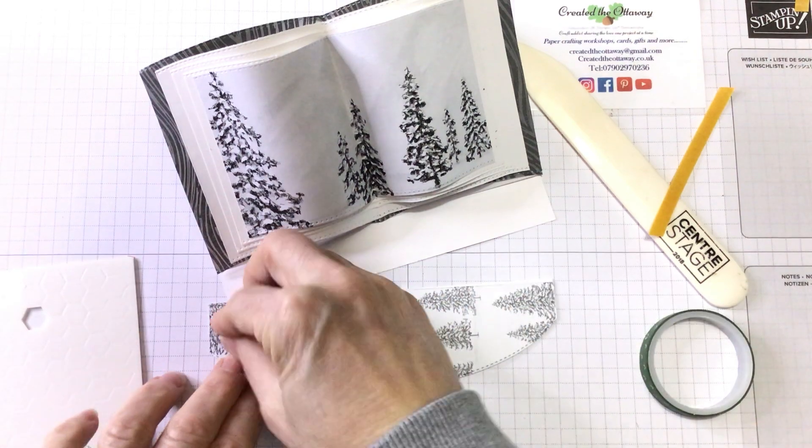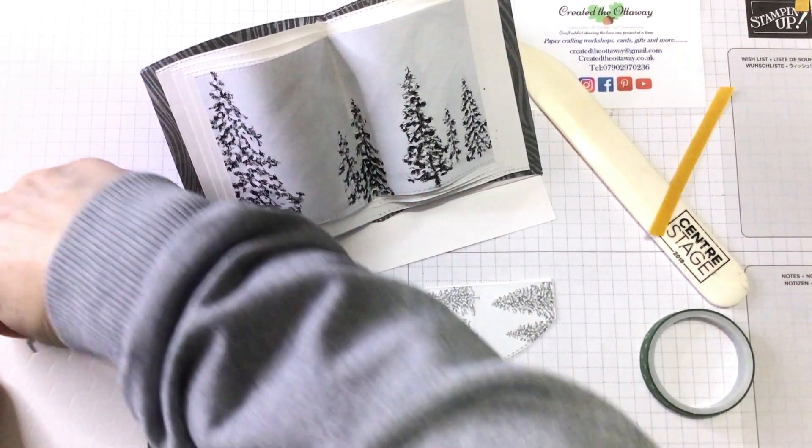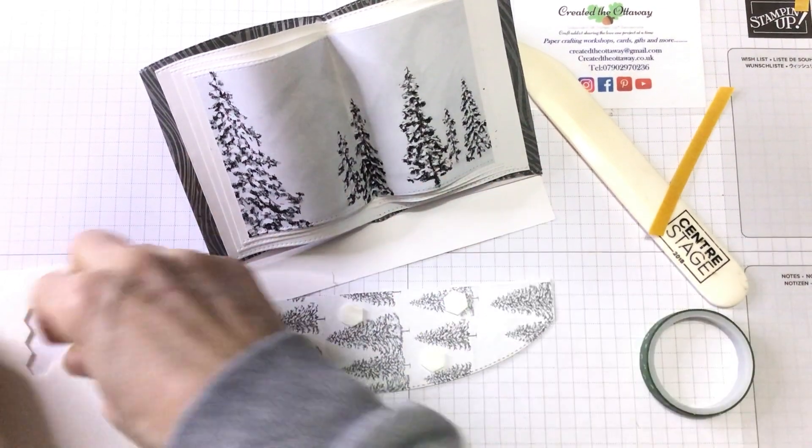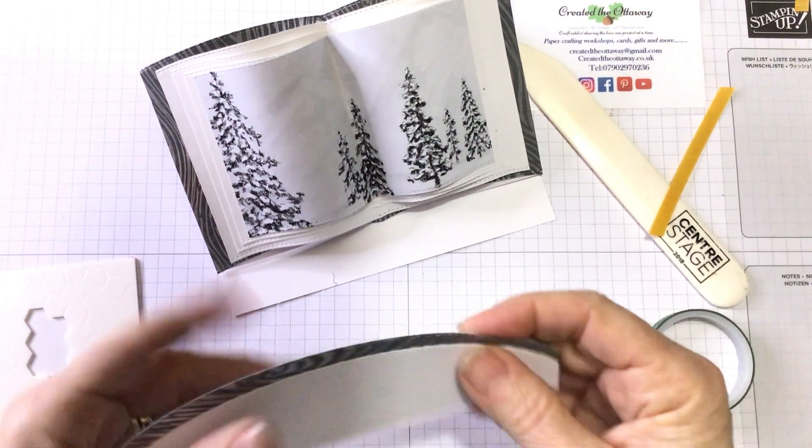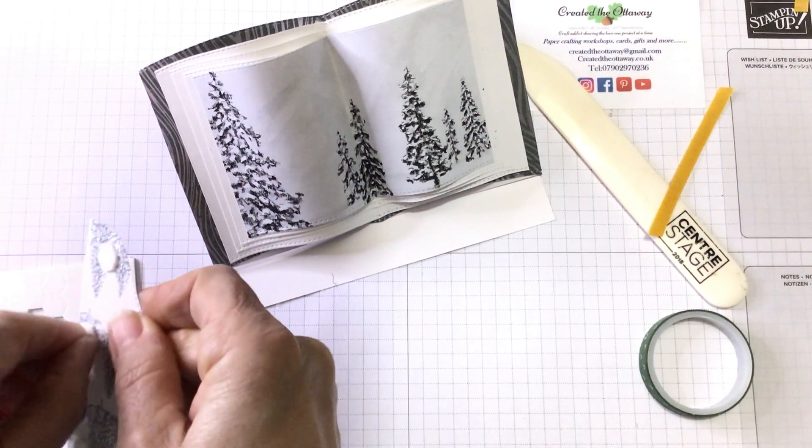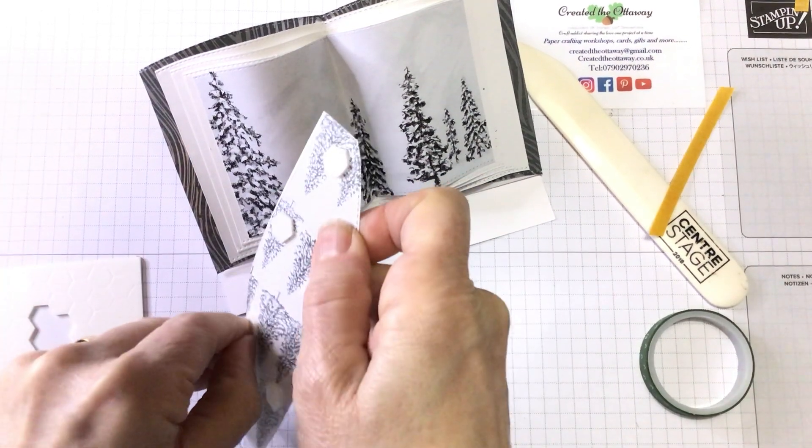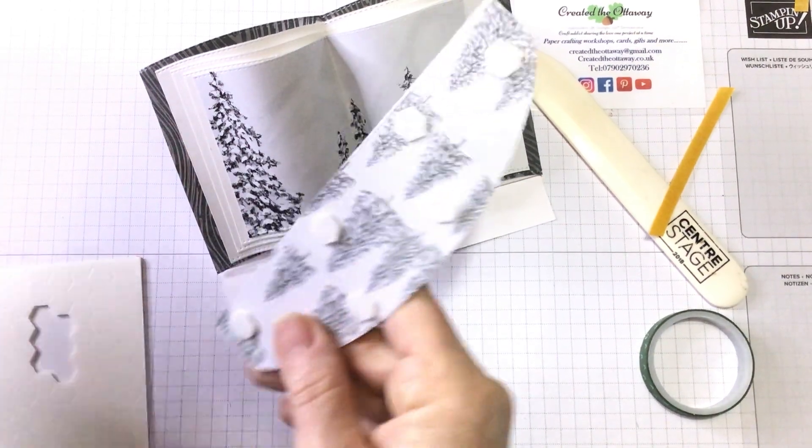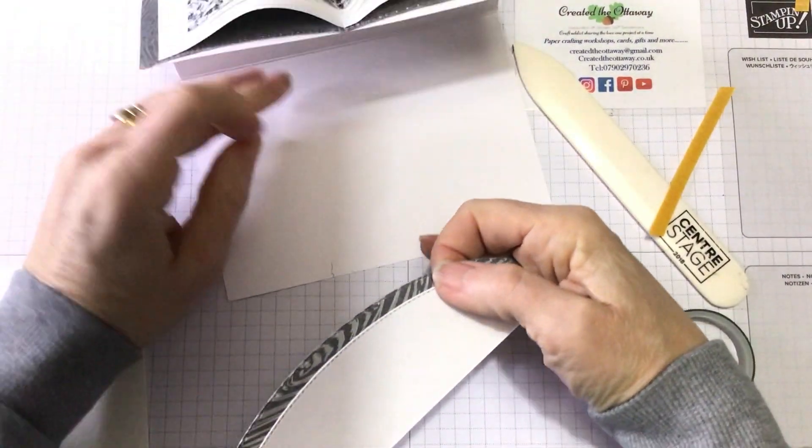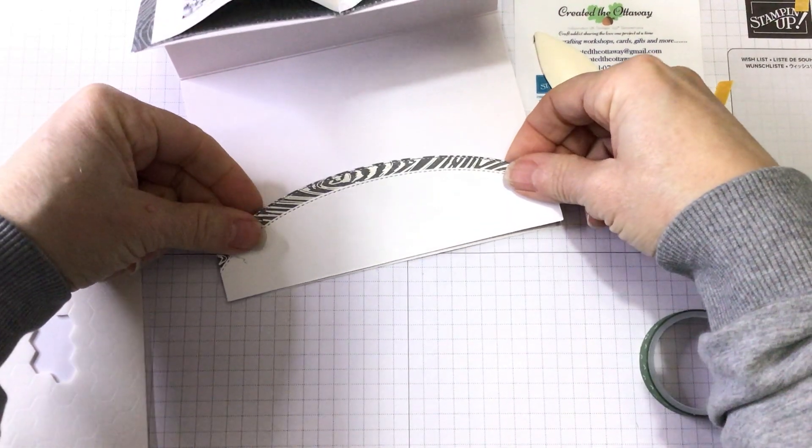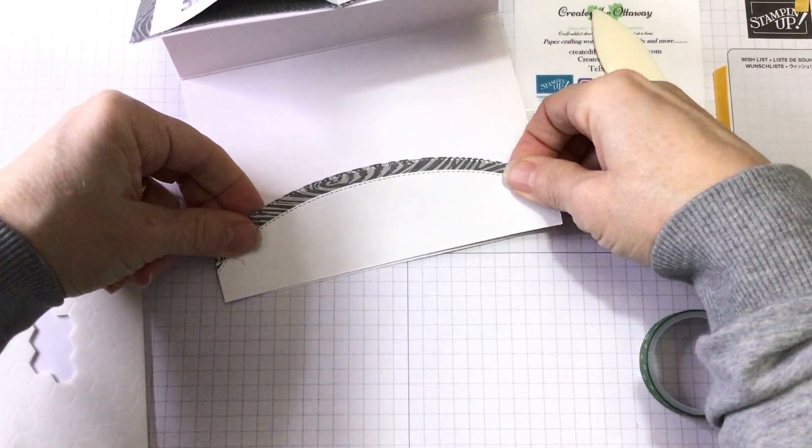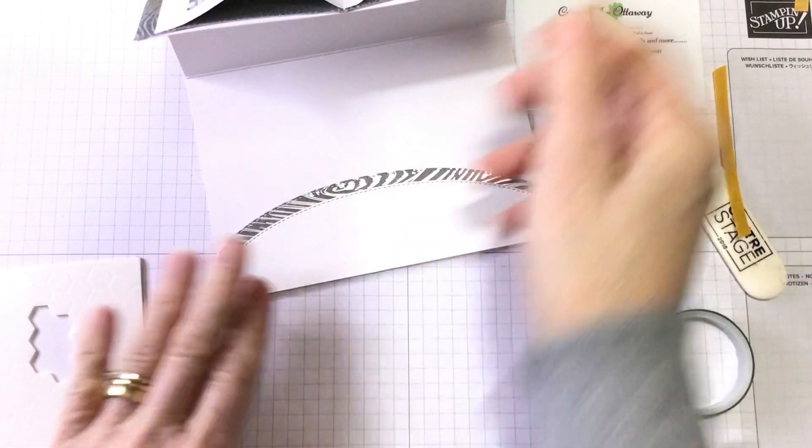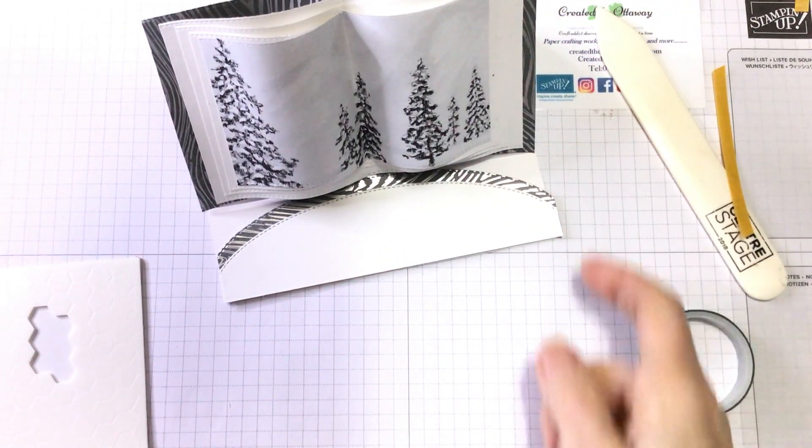And put some dimensionals on the back of there because you need it to stand up. New pack of the dimensionals. Don't you just love that? Starting a new pack. So you can put as many or as least as you want. I think that's probably about right. Just all over it. We are nearly there. Don't you just love it already? I can see lots of uses for this card. Let's move that out of the way. That is going to go along there. And that's just enough that that will stand up like that.